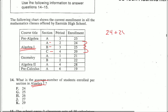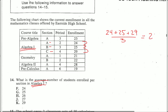24 plus 25 plus 29 divided by 3 gets me my average — 26 students per section is the average. Letter choice H.